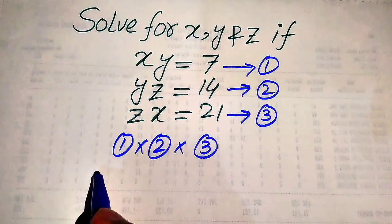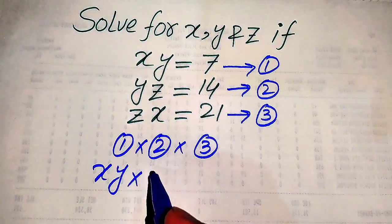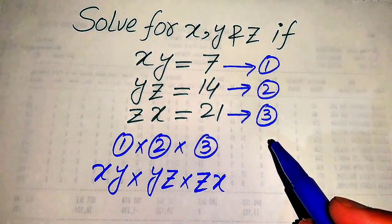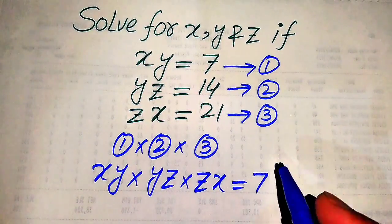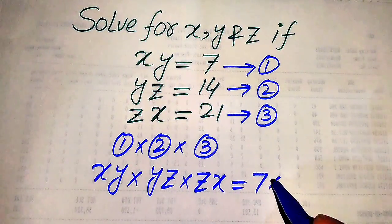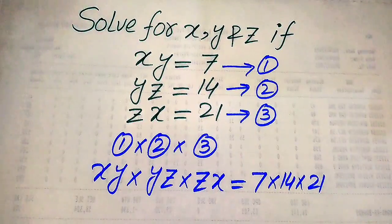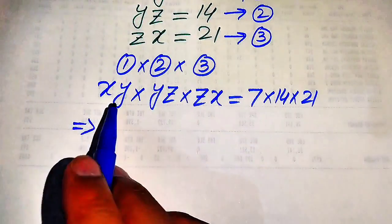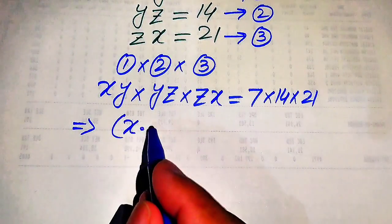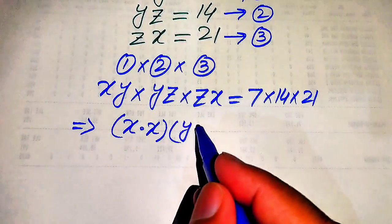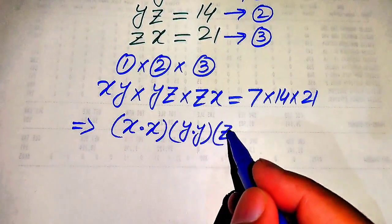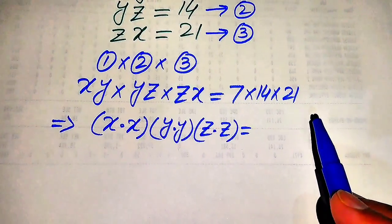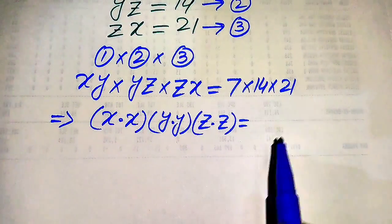We get xy multiplied by yz multiplied by zx. When we multiply these three equations, we multiply the left hand sides with left hand sides and right hand sides with right hand sides. On the right hand side we have 7 multiplied by 14 multiplied by 21. We rearrange the terms, multiplying x with x, combining the y terms, and z multiplied by z. We then find the prime factors of these three numbers.